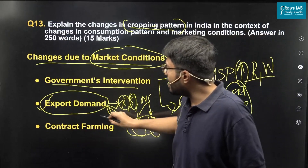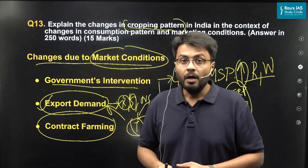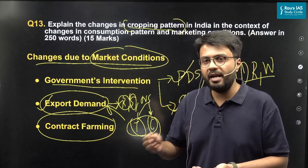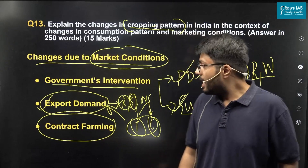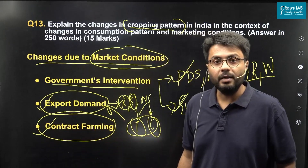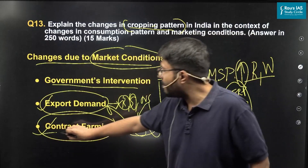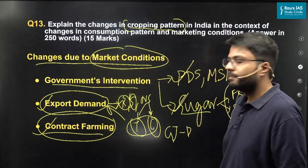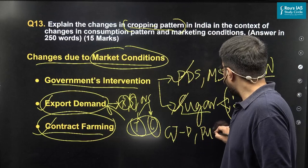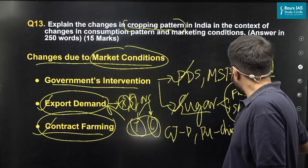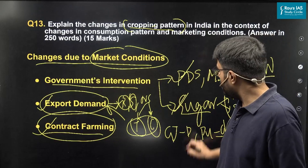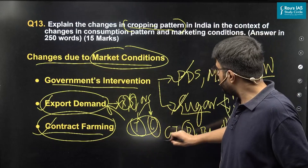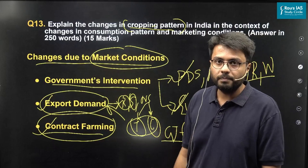We can also see the rise of contract farming in the country. A farmer enters into a contract with either a corporate or an agricultural trader to grow a certain kind of crop — this is what is referred to as contract farming. There is a notable rise of contract farming in India. For example, farmers in Gujarat are growing potatoes, whereas farmers in Punjab are growing chicory, as chicory is used to blend with different coffees. This rise in contract farming has changed the cropping pattern towards more commercial and horticultural crops.